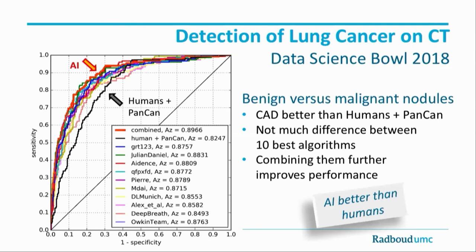Here's an example of how this can be put into clinical practice. This is an international competition that we provided data for, partially set up by our institution. The organizer promised $1 million for the best algorithms, and a huge number of groups participated. You can see the performance of these algorithms on an ROC curve. In black, you see the PANCAN algorithm from 2013 plus some human interpretation — namely spiculation, yes or no. All the artificial network algorithms are better, and if you combine them you get a really, really high area under the ROC curve. These AI systems nowadays create performances better than humans.